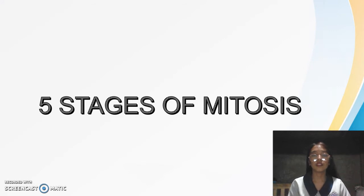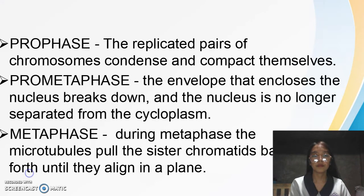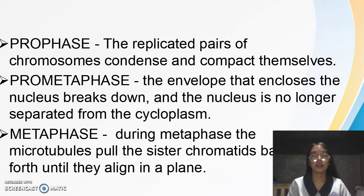The Five Stages of Mitosis. Prophase: the replicated pairs of chromosomes condense and compact within the cell. Prometaphase: the envelope that encloses the nucleus breaks down.